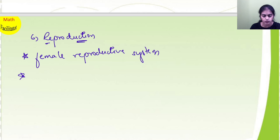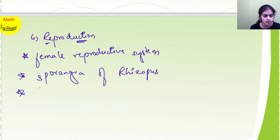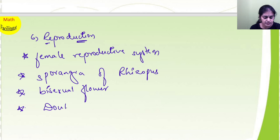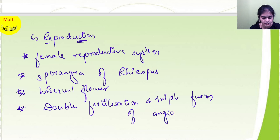All these essay questions, along with figures, you will learn. And you will also learn the apparatus and procedure followed for sporangia of rhizopus. And then you will learn the neat labeled diagram of a bisexual flower, and also please learn about double fertilization and triple fusion of angiosperms.